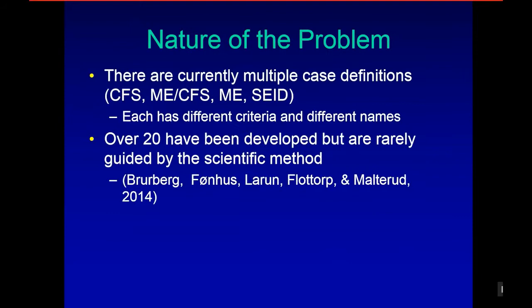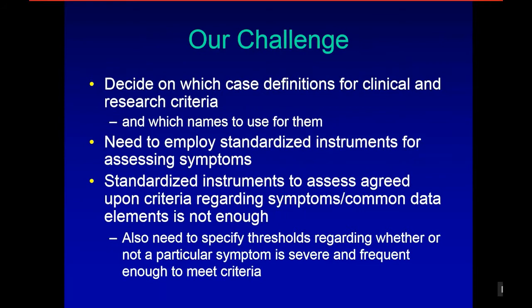The nature of the problem before us is that there are currently multiple case definitions — CFS, ME, SEID — each has different criteria and different names. Over 20 have been developed but are rarely guided by the scientific method. Our challenge is to decide which case definitions for clinical and research criteria and which names to use.